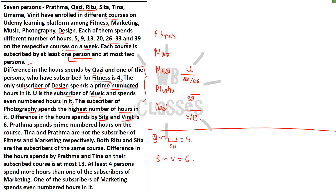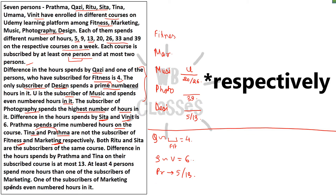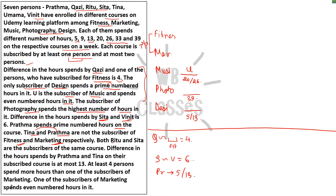Prithima spends a prime number of hours on the course — so prime number of hours would be 5 or 13. Then Tina and Prithima are not subscribers of Fitness and Marketing respectively — Tina and Prithima are both not in Fitness and Marketing. Ritu and Sita subscribe to the same course. The difference in hours spent by Prithima and Tina on their subscribed course is at most 13.